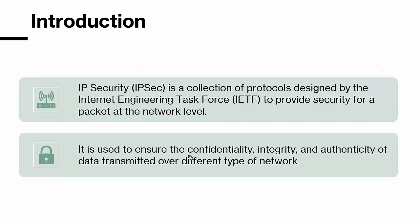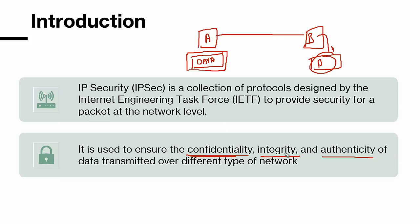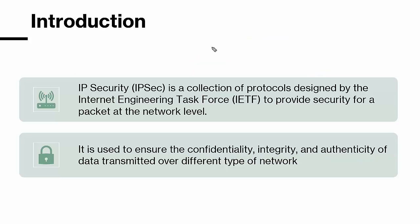IPSec is used to ensure the confidentiality, integrity, and authenticity of data transmitted over different types of networks. For example, system A encrypts data with a key, it remains encrypted throughout the journey, and system B uses the same key to decrypt it — that is how it offers confidentiality. It also offers integrity and authenticity, which we'll discuss in more detail.